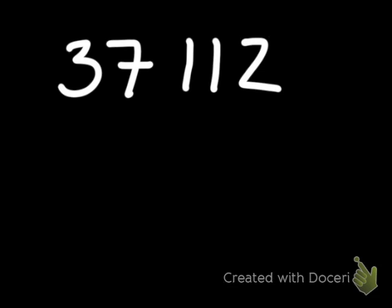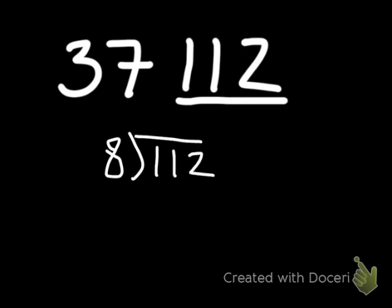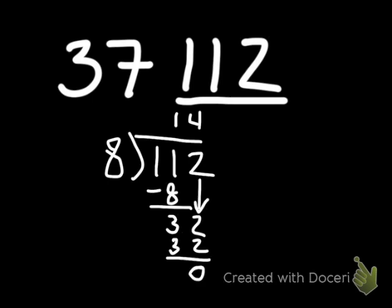Let's take a look at 37,112. We want to find out if 8 divides evenly into this large number. We look at the last three digits, which form the number 112. It doesn't appear obvious whether 8 divides evenly into 112, so we need to do a little bit of math: divide 8 into 112. 8 goes into 11 one time; put down 8, subtract to get 3, bring down the 2. 8 goes into 32 four times, with 0 remainder. So 8 divides evenly into 112, and therefore 8 will divide evenly into 37,112.